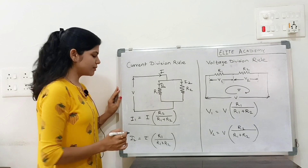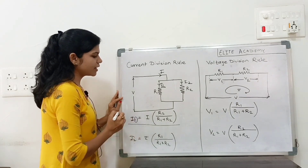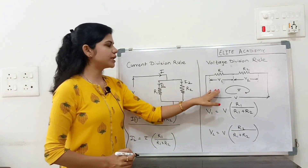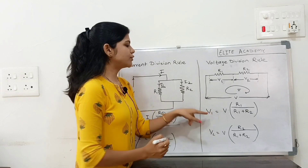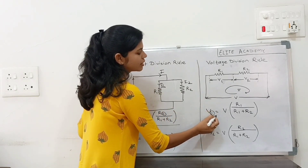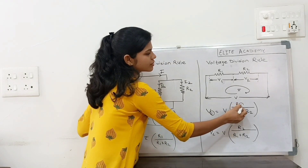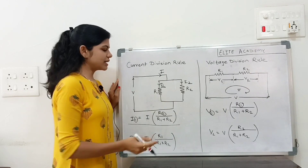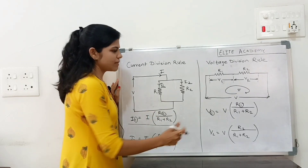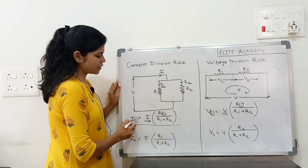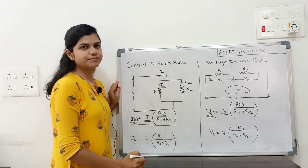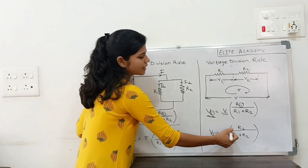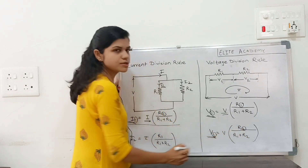Always remember: if we want to find I1, in the numerator there is R2. Whereas in the case of the voltage division rule, if we have to find V1, in the numerator there is R1. If you remember one formula you can derive the other. Total V here, total I there. For V2, it is V into R2 upon R1 plus R2.